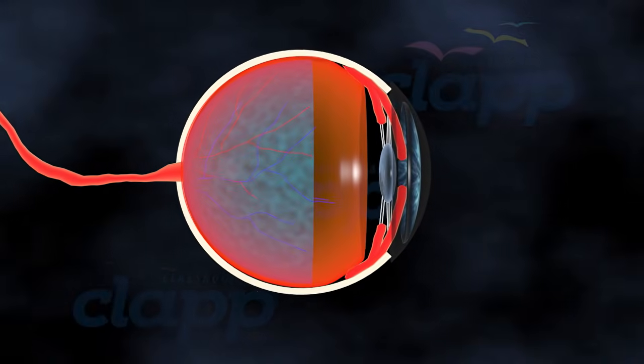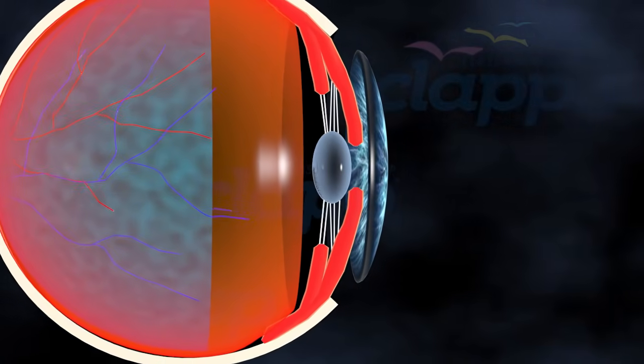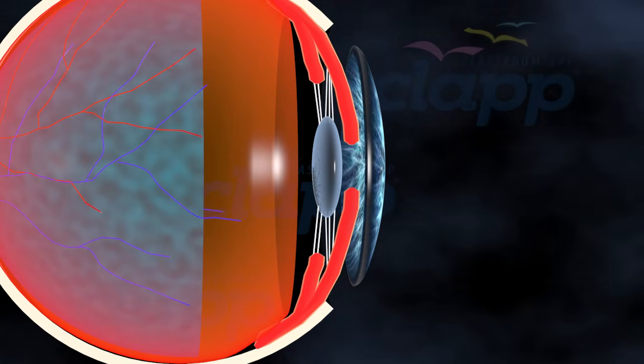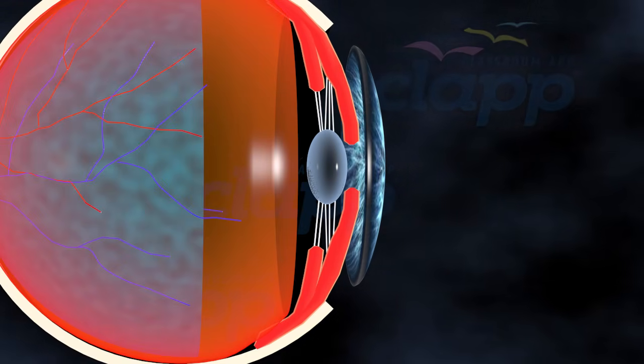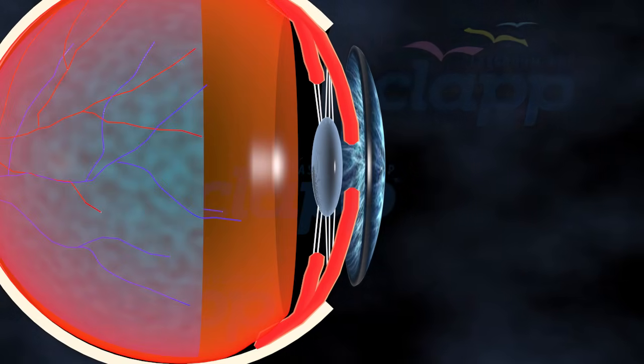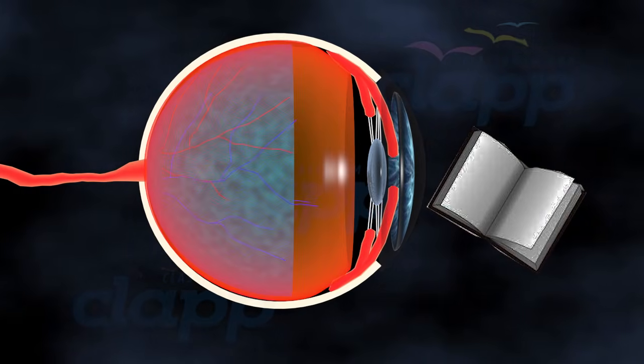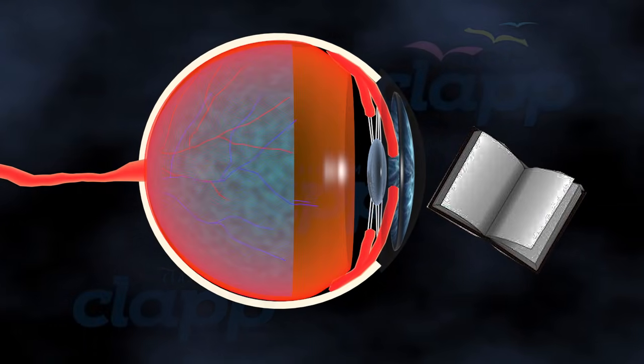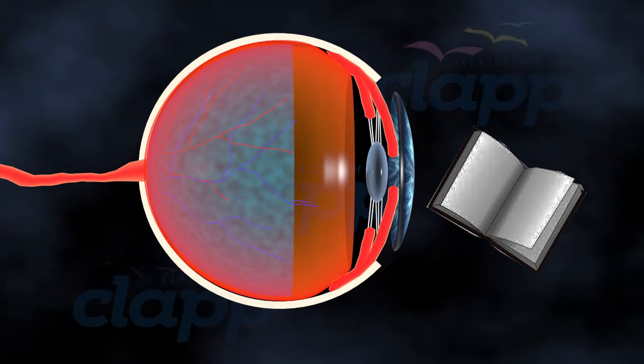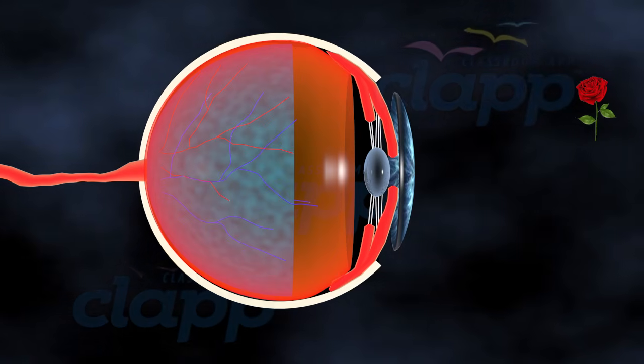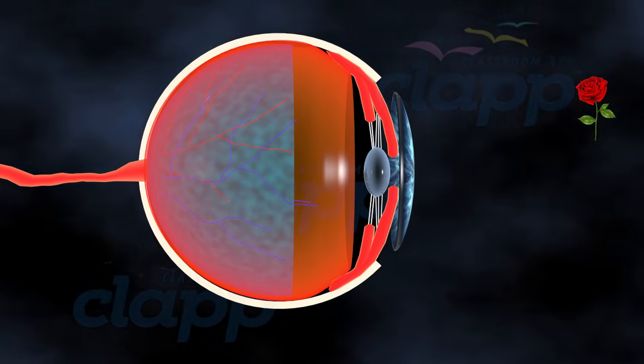One of the lens's remarkable abilities is accommodation. It can change its shape to focus on objects at different distances. When you look at something up close, like reading a book, the lens becomes thicker and more curved. And when you gaze into the distance, the lens becomes flatter.